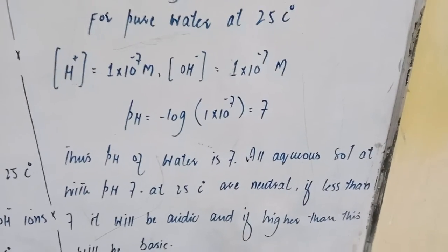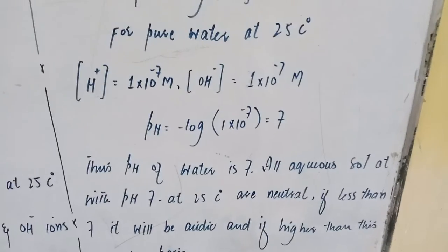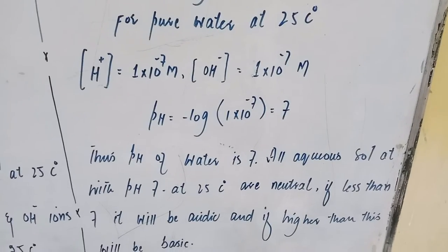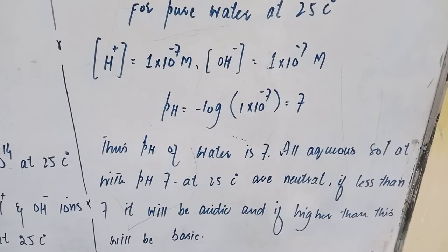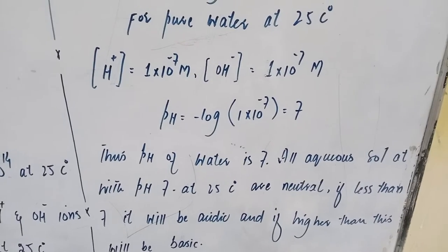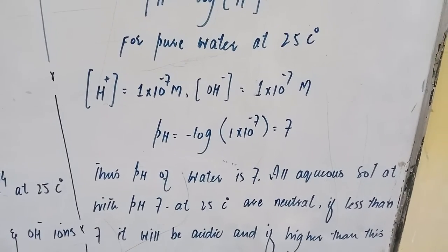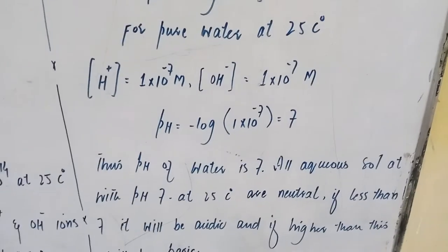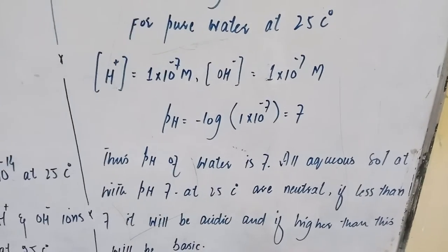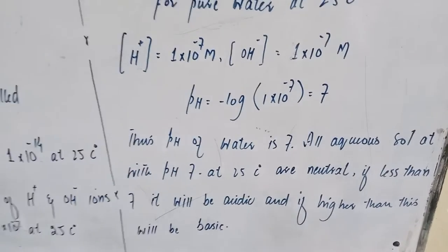Thus the pH of pure water is 7. All aqueous solutions with pH 7 are neutral at 25°C. If pH is less than 7, the solution is acidic; if pH is greater than 7, the solution is basic. This concludes the topic of self-ionization of water.